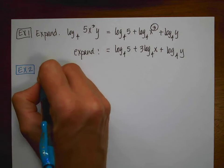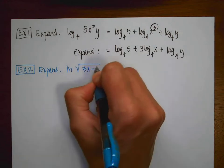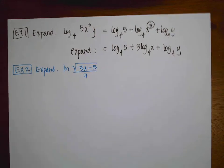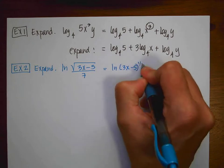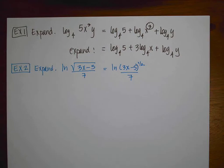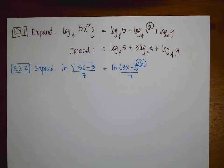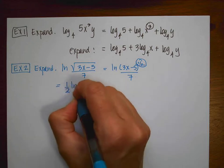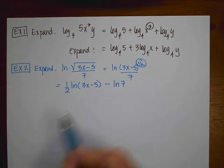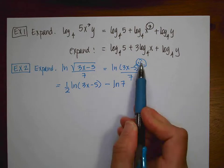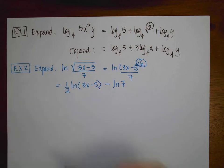Example 2 also says expand. We have the natural log of the square root of (3x − 5) divided by 7. Rewrite this as the natural log of (3x − 5) to the one-half power, divided by 7. Managing the exponent and division at the same time: this becomes one-half times the natural log of (3x − 5) minus the natural log of 7. Notice the one-half doesn't apply to the 7, because the square root only applied to the (3x − 5).